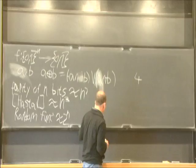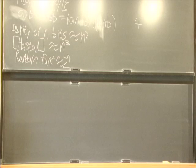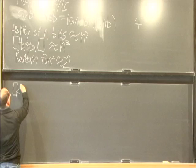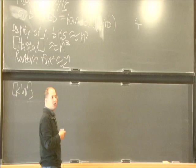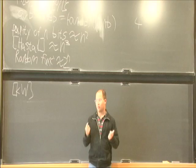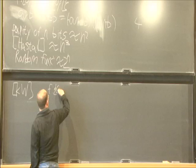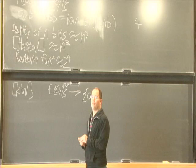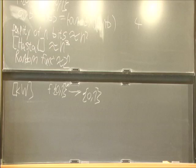So there is a result by Karchmer and Wigderson saying that in order to analyze the formula complexity of a function, you can focus on analyzing the hardness of a related communication problem. And by this I mean the following. Suppose I have a function f from 0,1 to the n to 0,1, and I want to analyze its formula complexity. And the result of Karchmer and Wigderson is saying that the formula complexity of this function is equivalent to a related communication game.